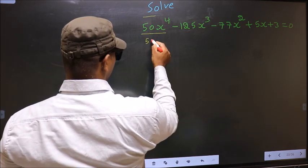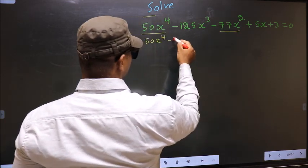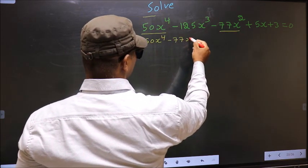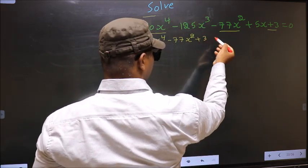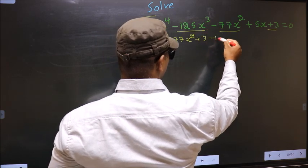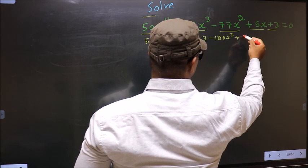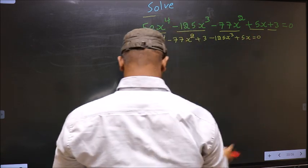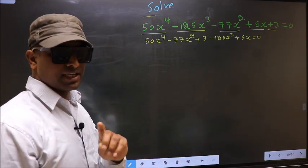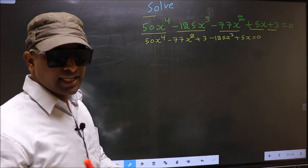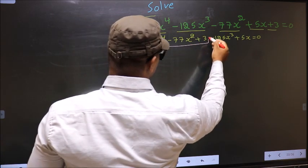First we write the x⁴ term, next the x² term, next the constant, next the x³ term, and finally the x term: plus 5x equal to 0. This is step 1. The reason we did rearrangement is so that now we can factorize these 3 terms.